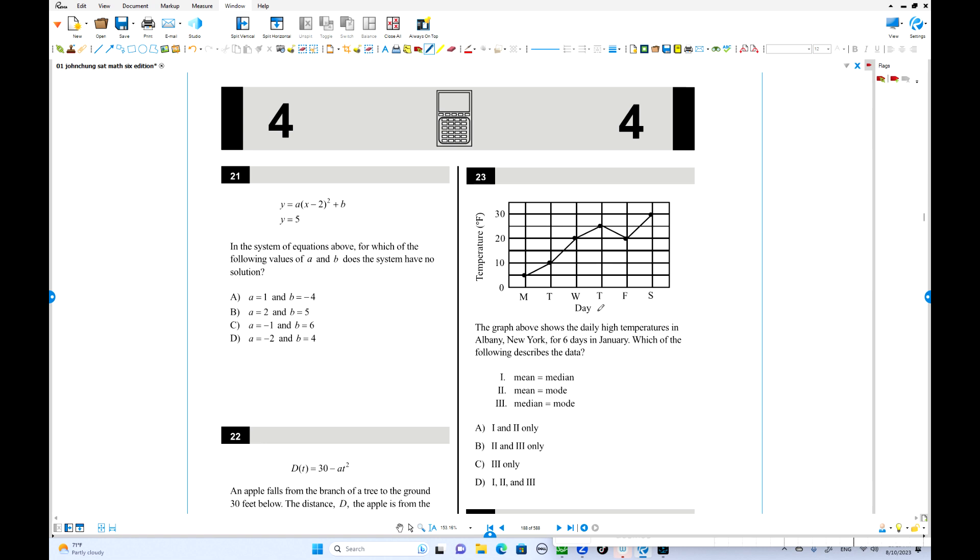One more. Number 21. y equals a times x minus 2 squared plus b. Another equation is y equals 5. We have a system of equations. Which of the following a and b makes this system has no solution? No solution means no intersections. We have four options there. You can check out the answer until you find the answer. a is 1, b is negative 4. What is the graph of this? Negative 4 down over here. This is 2. That is vertex. Graph is open upward. But where is y equals 5 up here? They have two intersections. That's not correct.